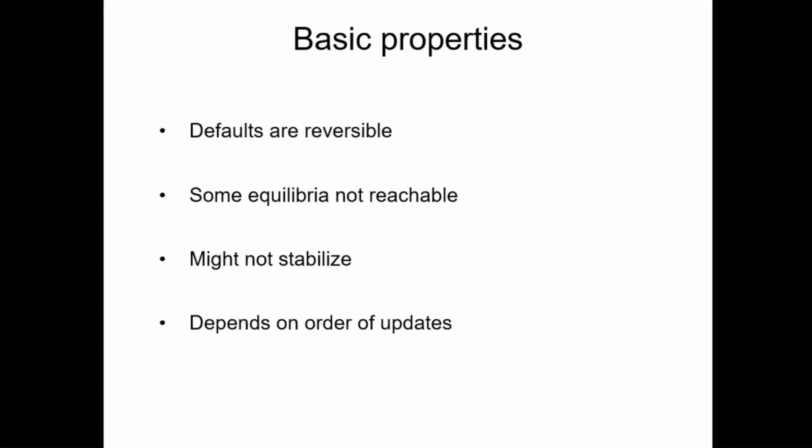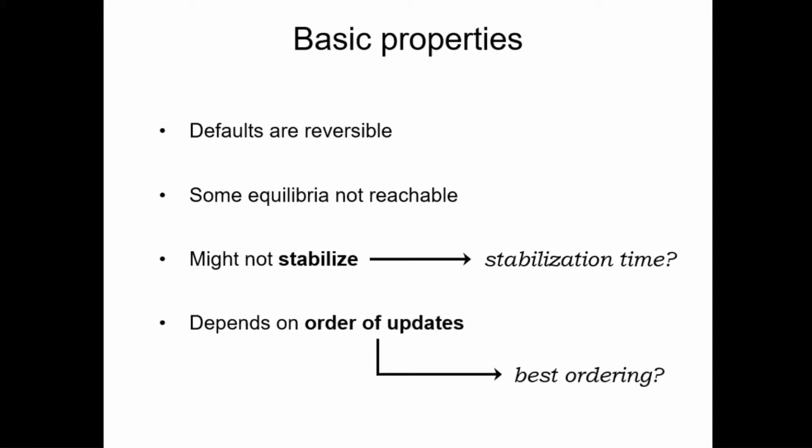These two examples already show some of the most important properties of this sequential model. Nodes can occasionally come back from a default if they acquire new assets later. Not every equilibrium of the network can be reached as a final outcome. The sequential process might keep going indefinitely and not stabilize after any number of updates. The outcome of the process is heavily dependent on the order in which we execute the updates, and the two questions of stabilization time and best ordering are connected because stabilization time also depends on the order of updates.